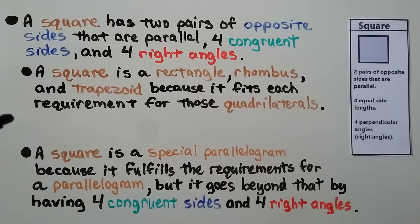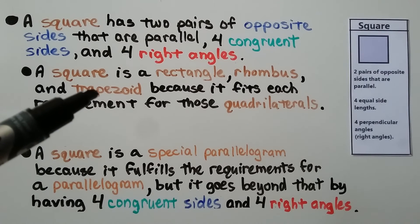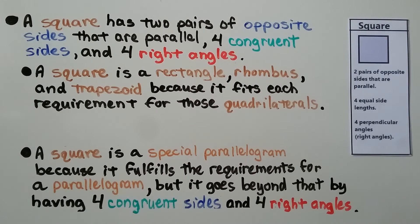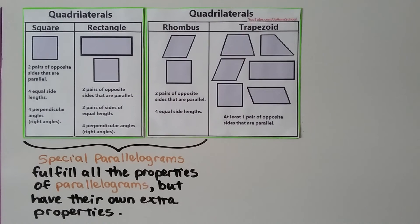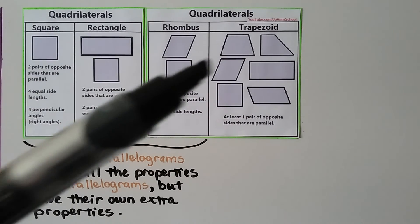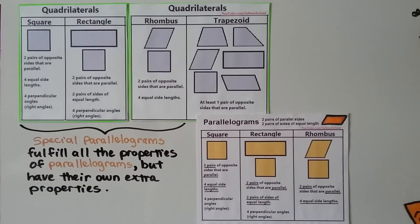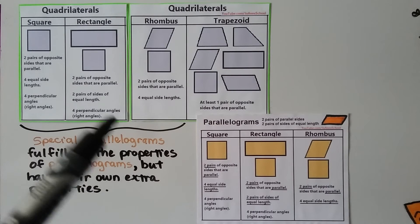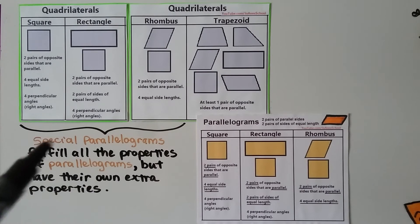Squares are a lot of things — they're a rectangle, rhombus, trapezoid, and are considered a parallelogram. So for quadrilaterals we've got a square, a rectangle, a rhombus, a trapezoid, and parallelograms. These are special parallelograms because they fulfill all the properties of parallelograms but have their own extra properties.